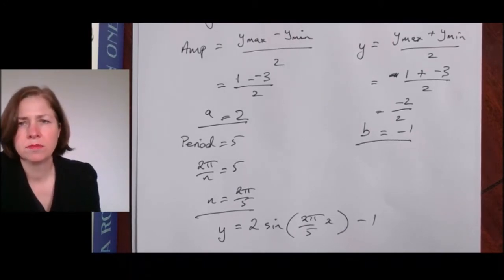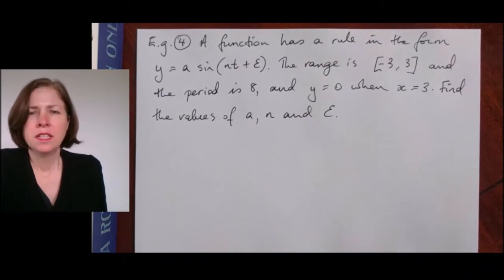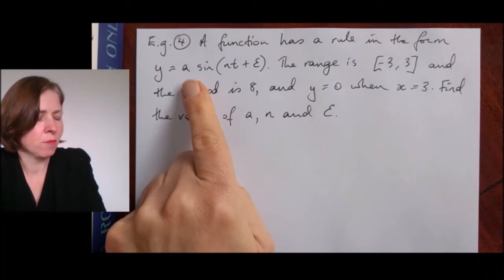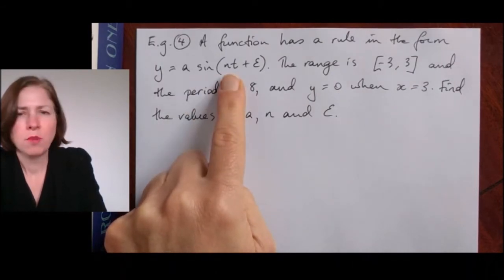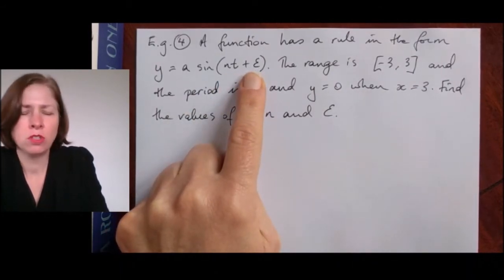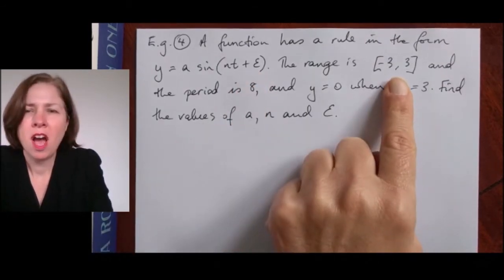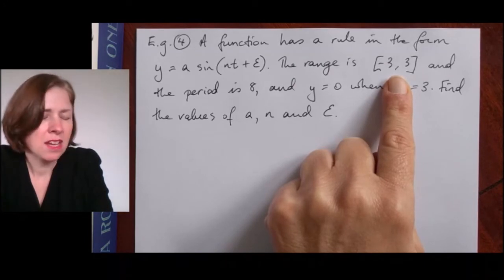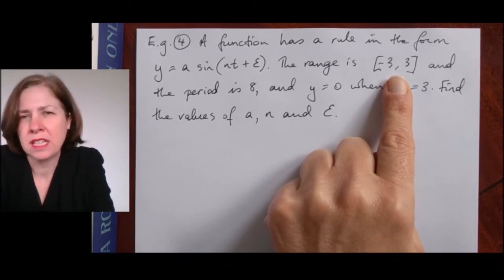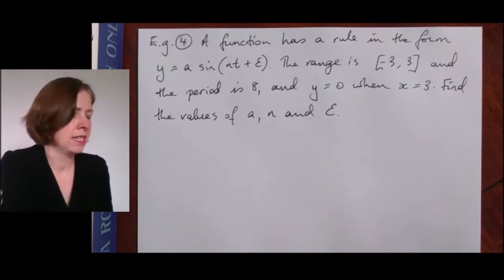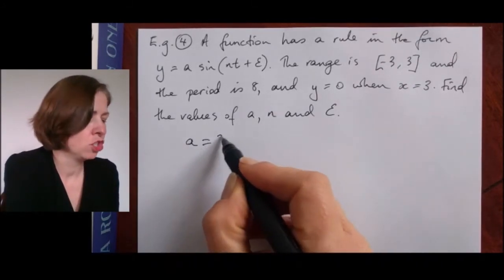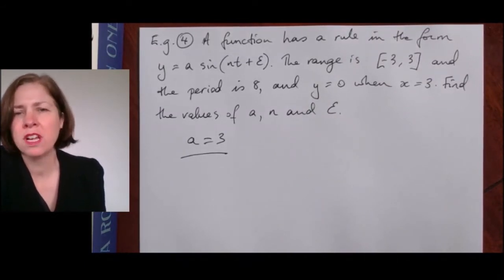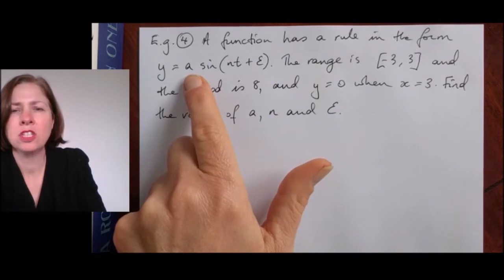Now I'm going to start looking at example four. I can see I'm going to have an amplitude, a horizontal dilation, and a horizontal translation. From the range — the range is from negative three to three — there's no vertical translation, which means I can very quickly write down my amplitude. The amplitude is going to be three, using the pronumeral a as asked.